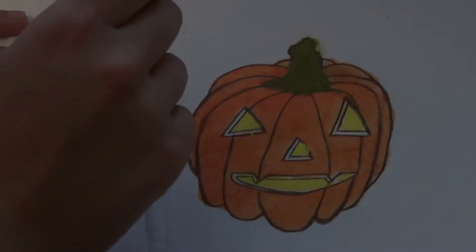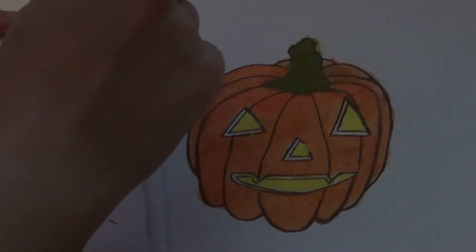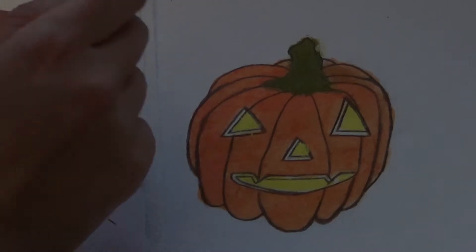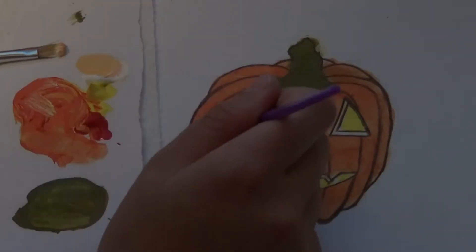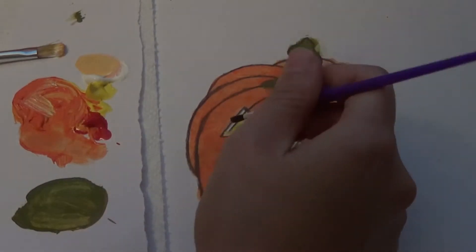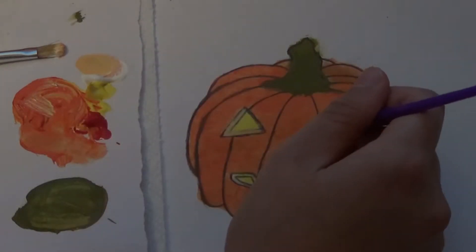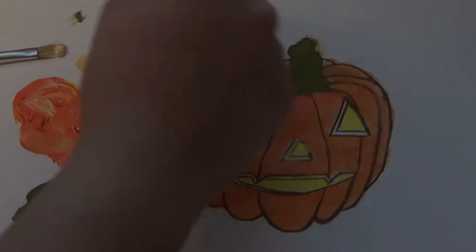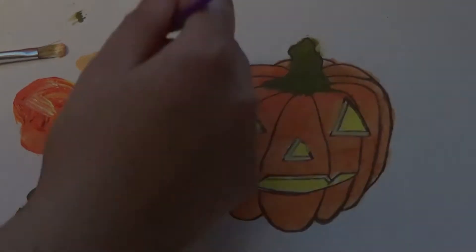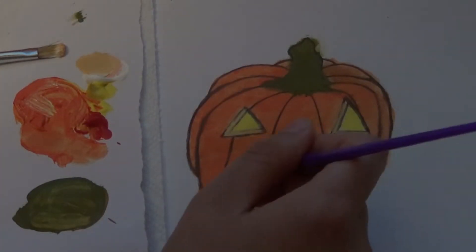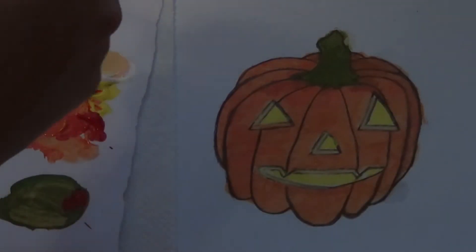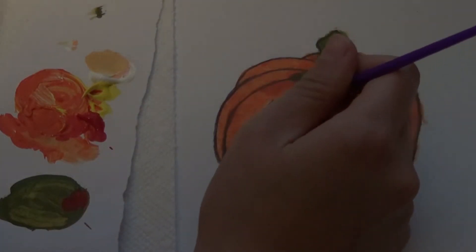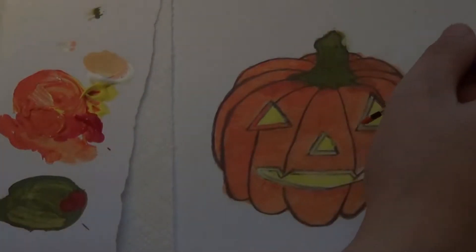Then I mix that yellow and white paint together to get this tan kind of color which I'm going to use to fill in that edge on the facial features. After that dried I also went over them in orange so this orange is going to be more solid than the orange I used to fill in the rest of the pumpkin.